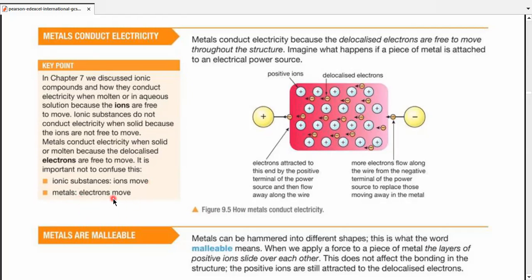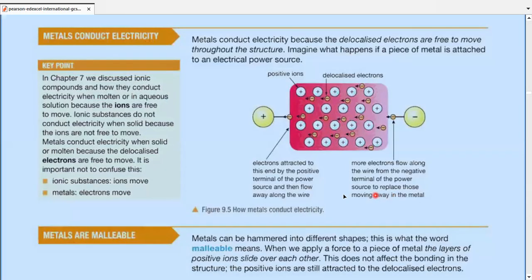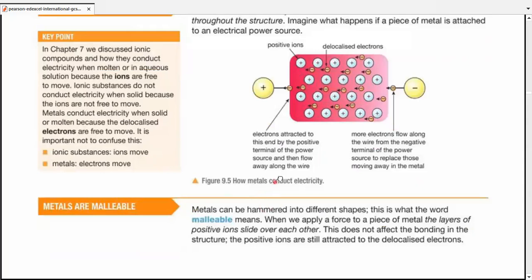Metals have electrons, delocalized electrons, moving so they are conductors in their solid or liquid both of the states. So it's the difference between ions and electrons. Both are charged particles though.